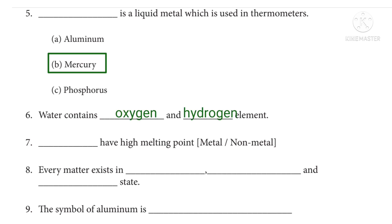Seventh question: dash have high melting point, metal, non-metal. The correct answer: metal.